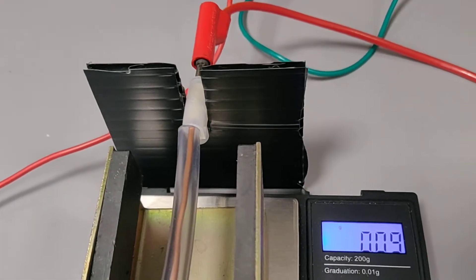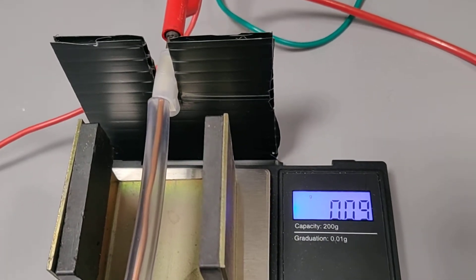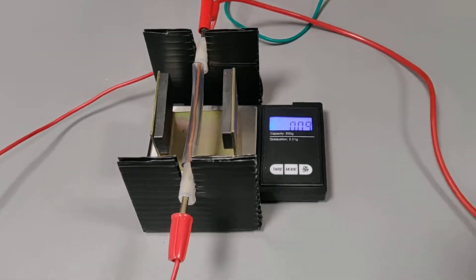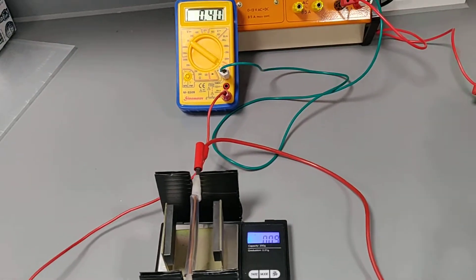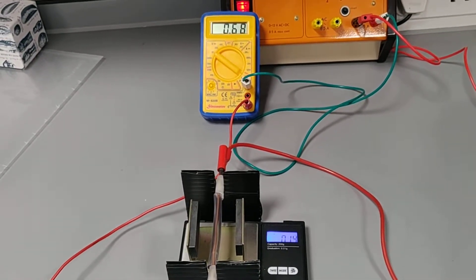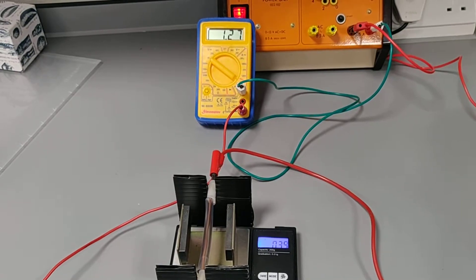The second thing you'll notice is that there is now a reading on the balance. It's 0.09. And if I step back a little bit, you may be able to see both readings on the ammeter and the balance at the same time. As I increase the current, you'll see that the reading on the balance goes up as well.